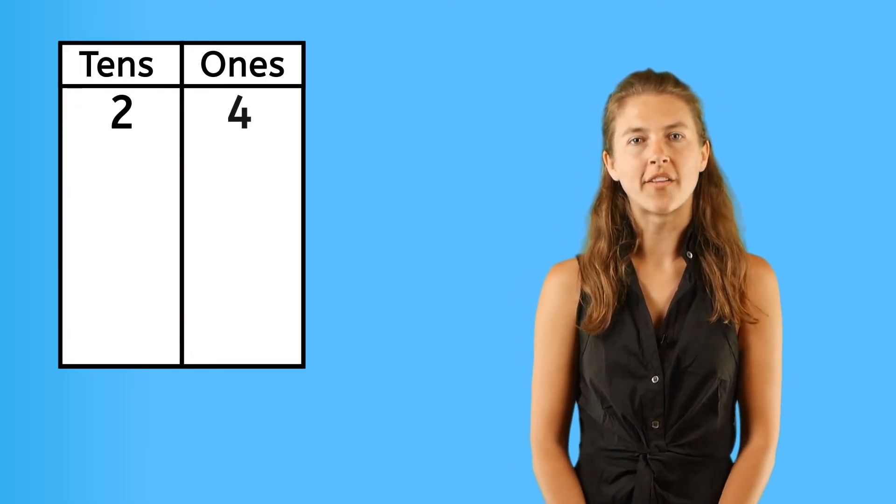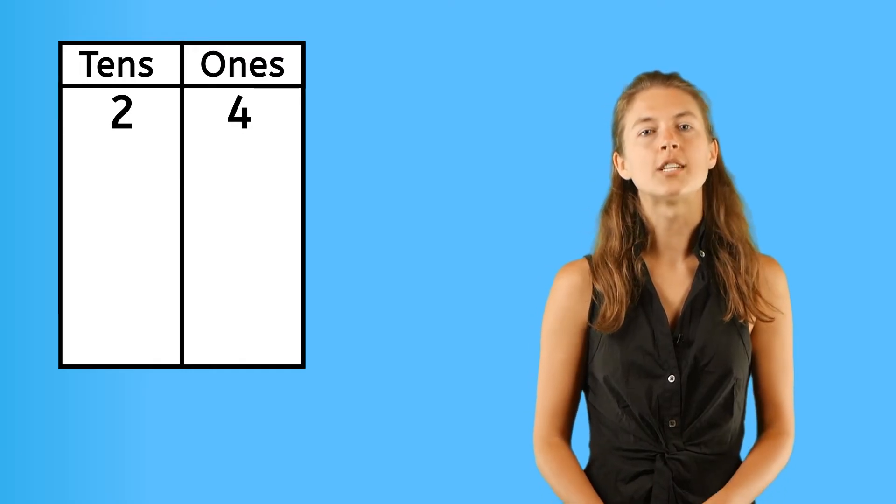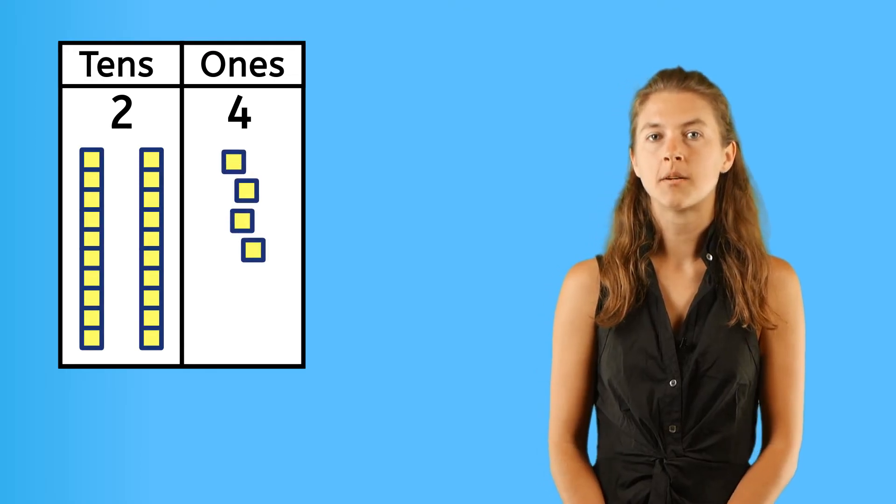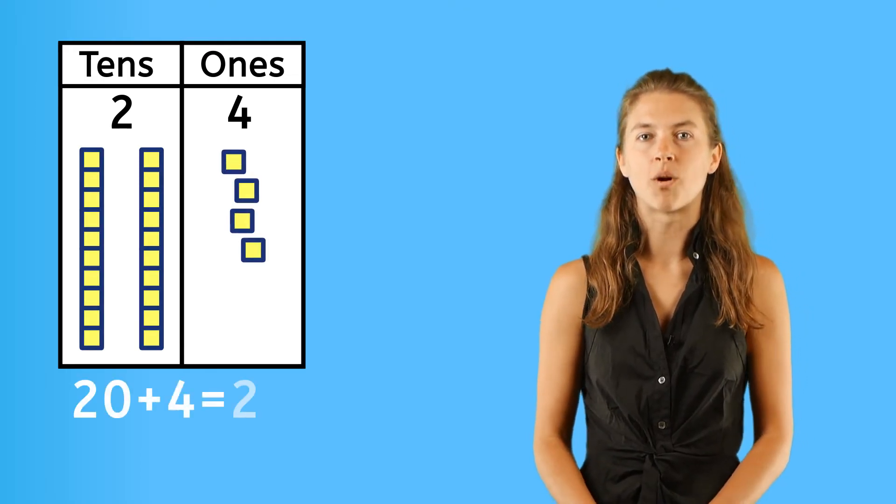If we place the number twenty-four on the place value chart, we see that twenty-four is actually made up of two groups of ten and four ones. Or, two tens and four ones.